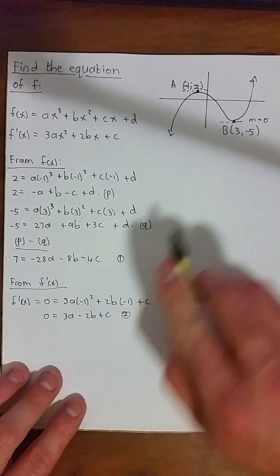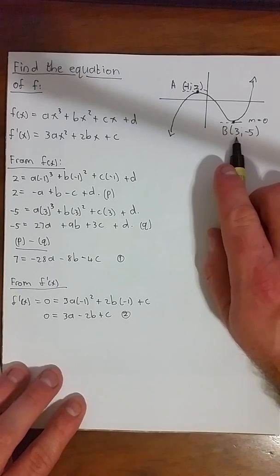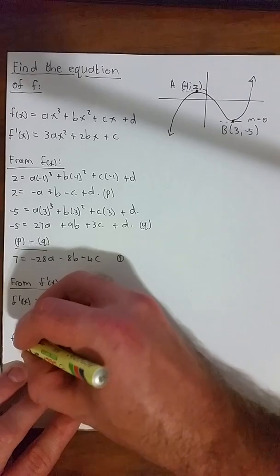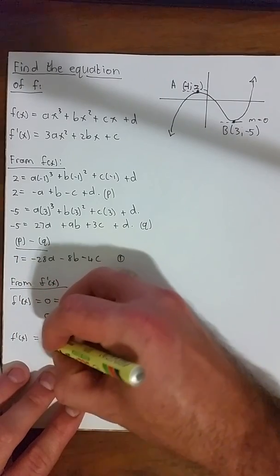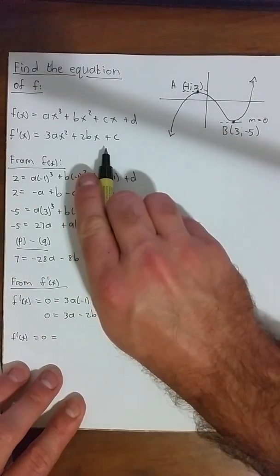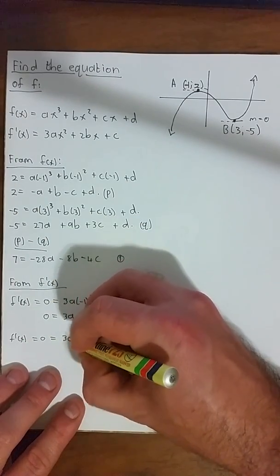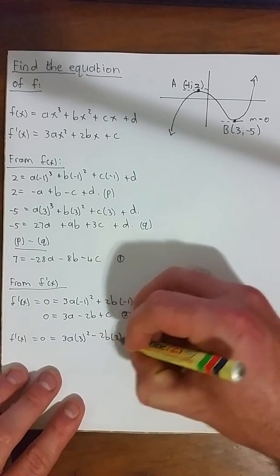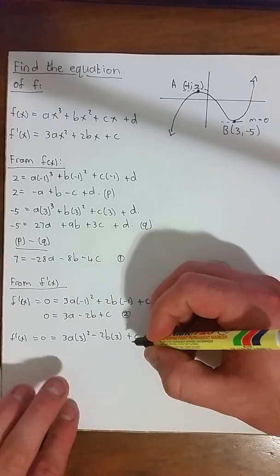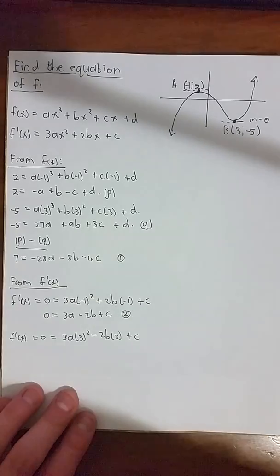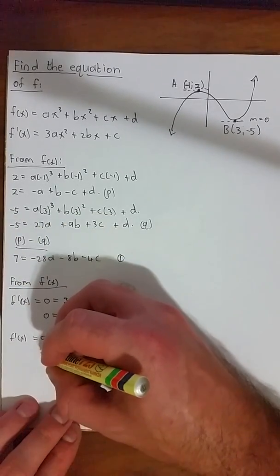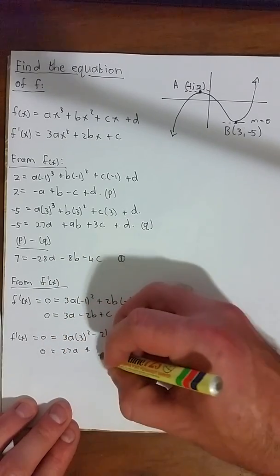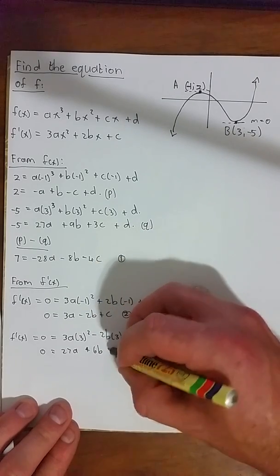Now we can do the same with the x value of 3. When x is 3, the gradient function will be equal to 0 again. We have 3a(3)² + 2b(3) + c. And again, a bit of simplification yields the following: 0 = 27a + 6b + c.